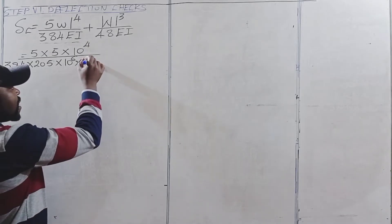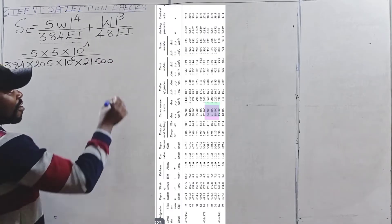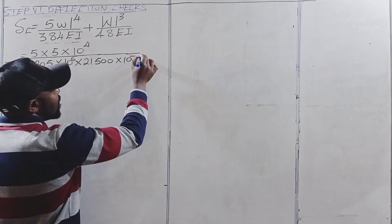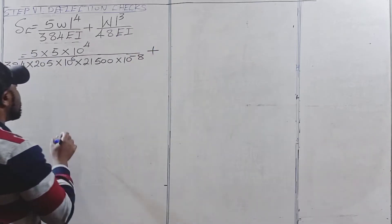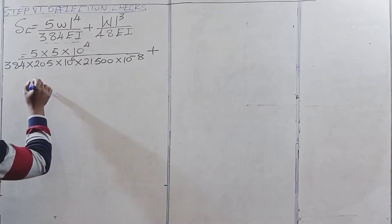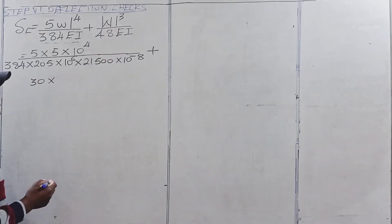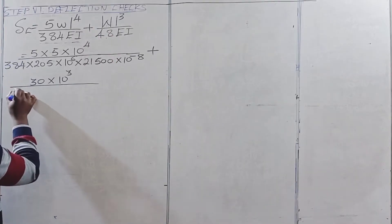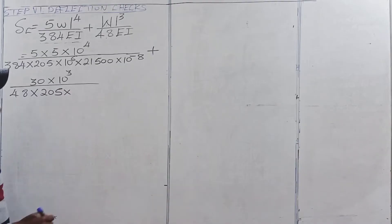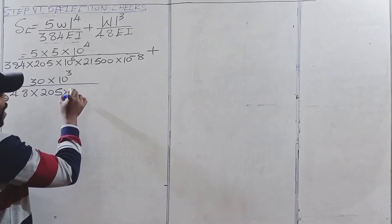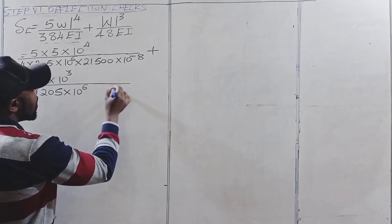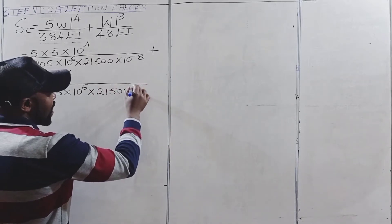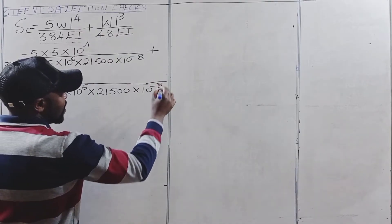The second moment of area from Appendix B is 21,500 cm⁴. We convert that to meters raised to 4 by dividing by 10 raised to the power of 8. Then we add the second term: W is the point imposed load of 30 kN, multiplied by L cubed where L is 10, so 10 cubed. We divide by 48 times the elastic modulus of 205 kN per square millimeter, converted to kN per square meter by multiplying by a million, times the second moment of area 21,500 cm⁴, converted by multiplying by 10 raised to the power of negative 8.